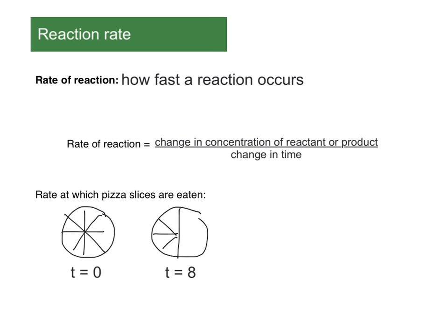So if we call this T equals eight, then that is how much pizza has disappeared in a particular amount of time. And then if we come back four minutes later, so this will be after 12 minutes, what we find is that we now only have two slices of pizza left. And then if we come back again, it's 16 minutes.